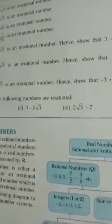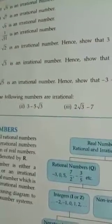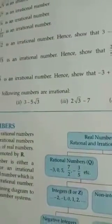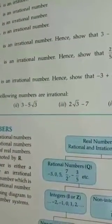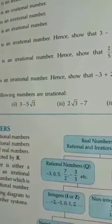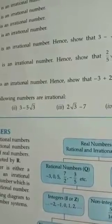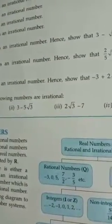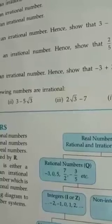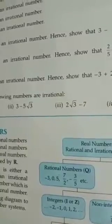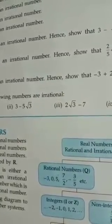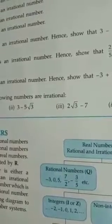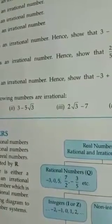Now let us discuss the properties of real numbers. There are four properties. The first property tells: if a and b are two real numbers, then the sum a plus b is also a real number. The second property tells: if a and b are two real numbers, the difference, that is a minus b, is also a real number.